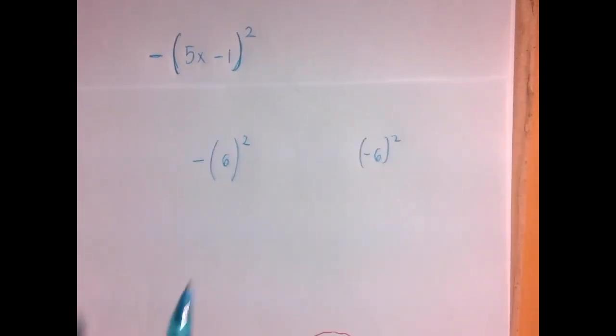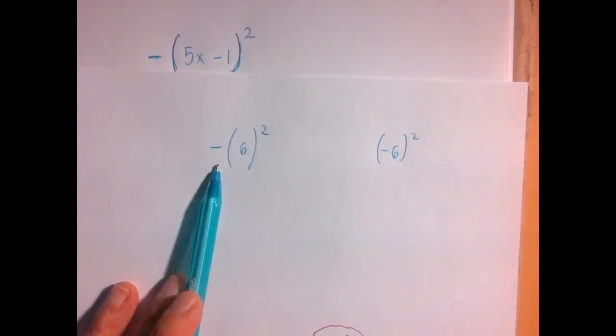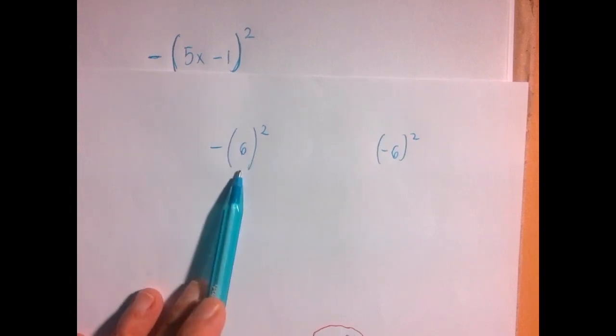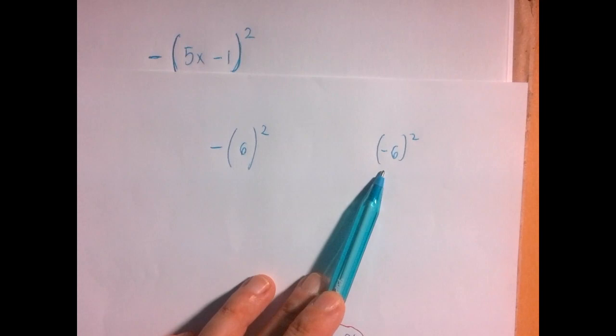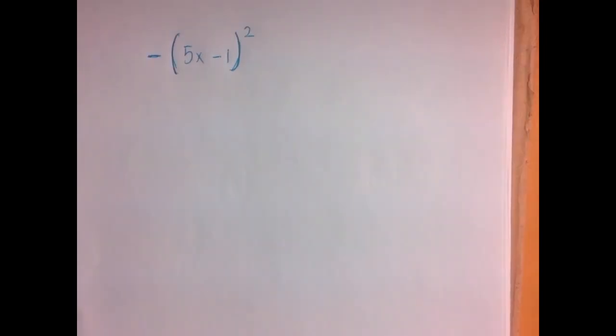Just as an example, this is negative 1 times the square of 6. This is the square of negative 6. This is positive. This is negative. So let's not do that.